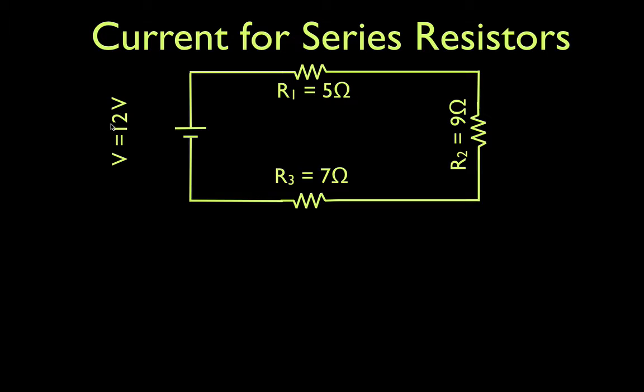We have a 12 volt battery, we have three resistors in series, R1, R2, and R3. You can see they come one right after the other, they're not parallel, they're in series, and that's why we call them series resistors.